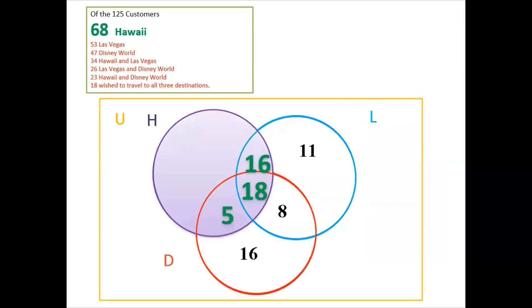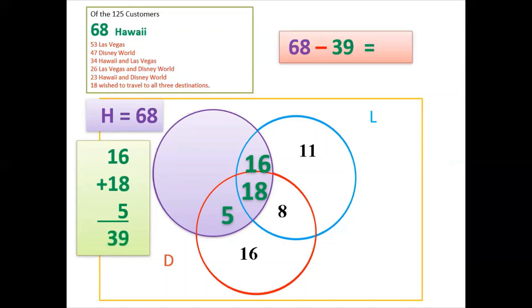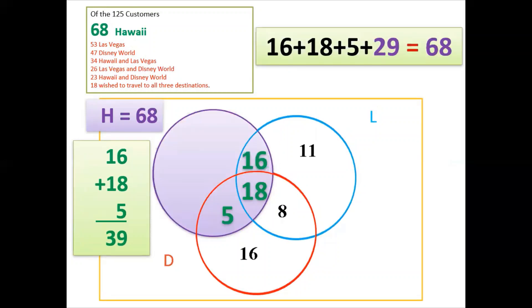Next, 68 want to go to Hawaii. Inside the Hawaii circle we have 16, 18, and 5 — a total of 39. So 68 minus 39 equals 29.